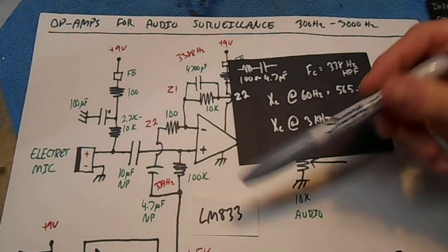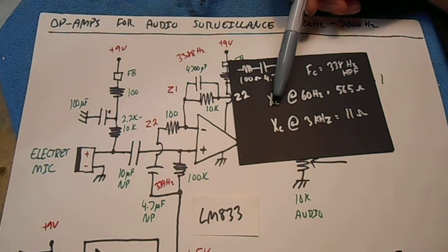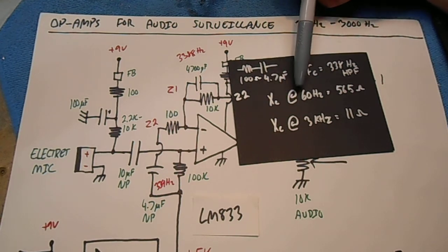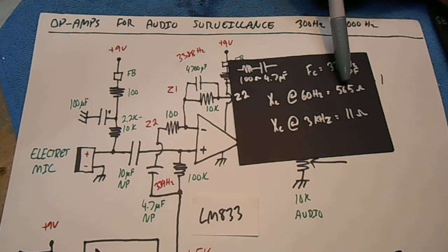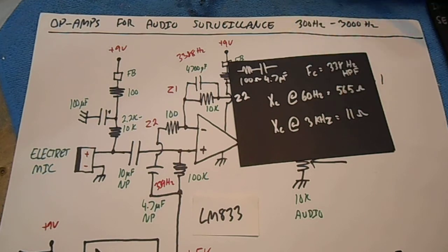Now for our series input element here, we have a 4,700 picofarad capacitor. The reactance at 60 hertz of that capacitor is 565 ohms, while at 3,000 hertz it's only 11 ohms.